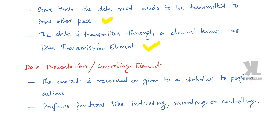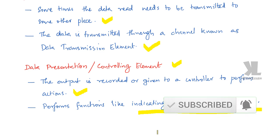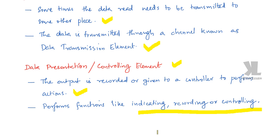Now we have the final one — the data presentation or controlling element. The output is recorded or given to a controller to perform actions. The performance functions include indicating, recording, or controlling. That is our output at the control center, and some task is performed such as indicating and recording. That is our data presentation or controlling element.